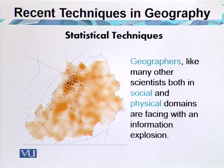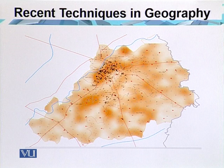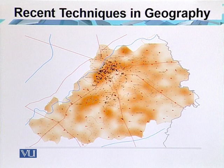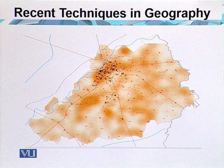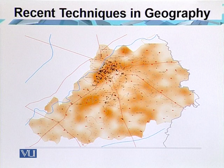Geographers, like many other scientists both in social and physical domains, are facing an information explosion. Statistics is the study of the collection, analysis, interpretation, presentation, and organization of data. The amount of numerical data is increasing at an accelerating rate. Most geographers have to deal with data obtained from samples rather than all the data they could possibly have about a particular situation, where the sample is representative of the total set of data.